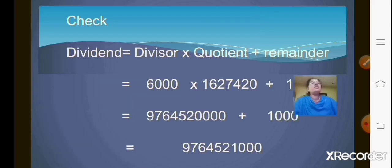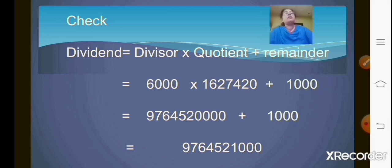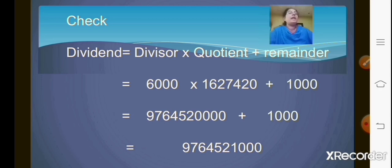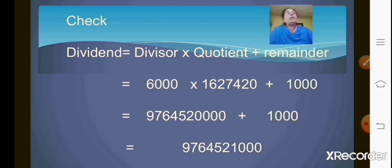Now the checking part — same formula: dividend equals divisor into quotient plus remainder. You will multiply the divisor and the quotient, then add your remainder that is 1000. After multiplying, you add the remainder 1000 to it and the number you get will be your dividend. The only thing is whatever zeros you are cancelling from the dividend and divisor, you have to add them while writing the remainder.